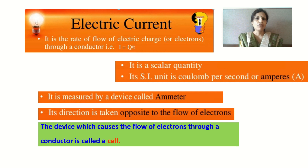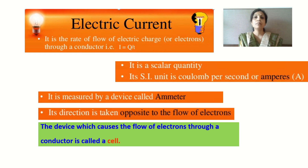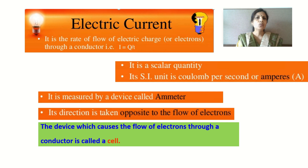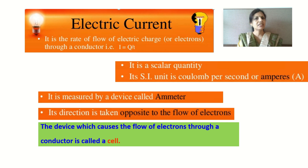Looking at the formula I = Q/T, the SI unit of charge is coulomb and the SI unit of time is second. So I = coulomb per second. The SI unit of electric current can also be expressed as coulomb per second, and this coulomb per second is also called as an ampere. So the SI unit of electric current is ampere, denoted by the letter capital A.